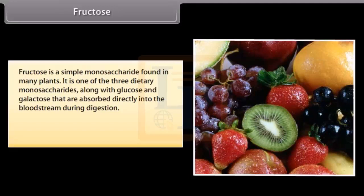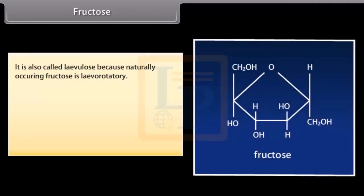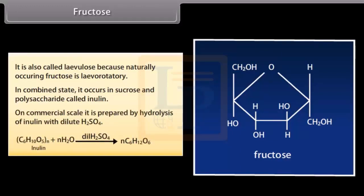Fructose is absorbed directly into the bloodstream during digestion. It is found along with glucose in the juices of ripe fruits and in honey. It is also called levulose because naturally occurring fructose is levorotatory. In combined state, it occurs in sucrose and the polysaccharide called inulin. On a commercial scale, it is prepared by hydrolysis of inulin with dilute H₂SO₄.